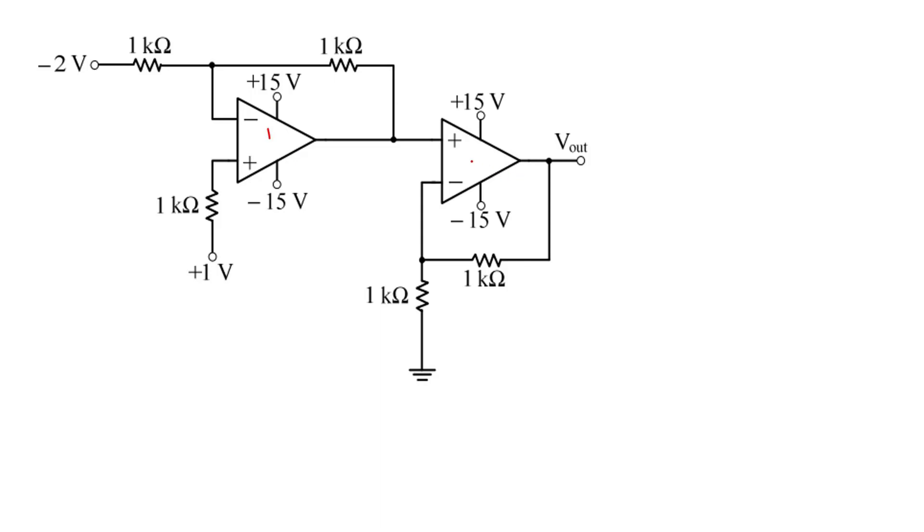Here both op-amps, op-amp 1 and op-amp 2, are connected in inverting configuration. Op-amp 1 has the non-inverting terminal connected to 1 volt source via a 1 kilo ohm resistance. We know that ideal op-amp draws no current, so i equals 0. That means there is no voltage drop across this resistor, so this 1 volt will appear across this node.